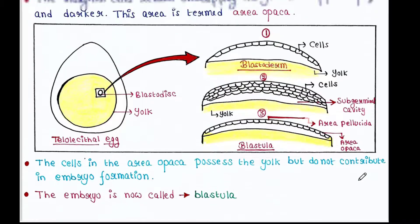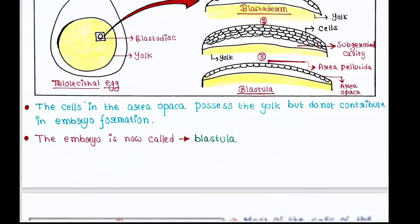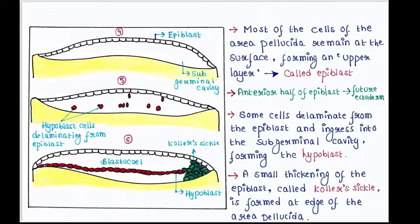The cells in the area opaca possess yolk but do not contribute to embryo formation, and the embryo is now called the blastula. Most of the cells of the area pellucida remain at the surface, forming an upper layer that is called the epiblast.